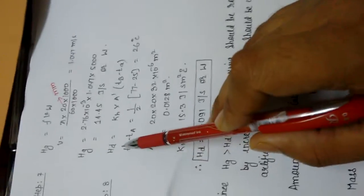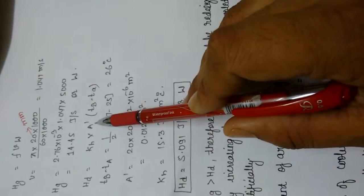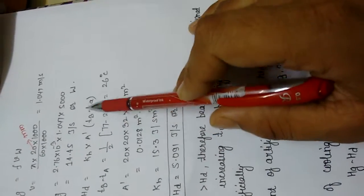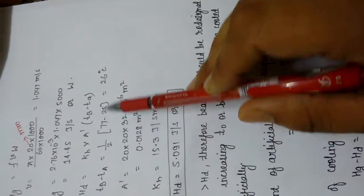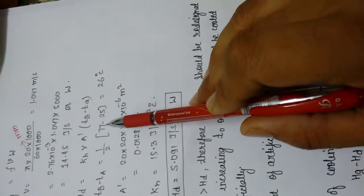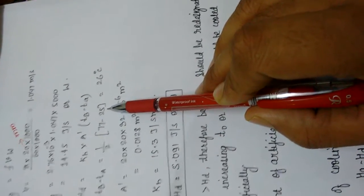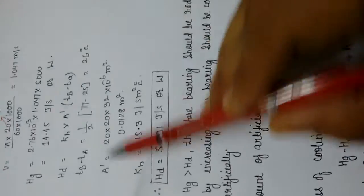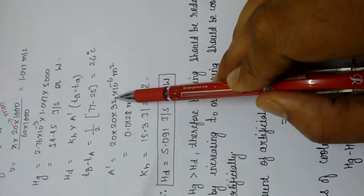Step 8 is heat dissipation: Hd = Kh × A' × (Tb − Ta), where Tb − Ta = 0.5 × (T0 − Ta). T0 is the oil film temperature and Ta is the atmospheric temperature, giving Tb − Ta = 26 degrees centigrade. Area A' = 20 × D × L.